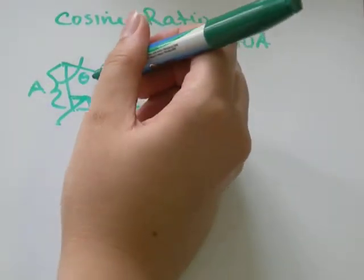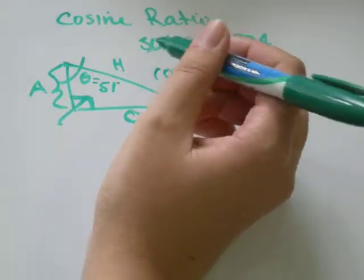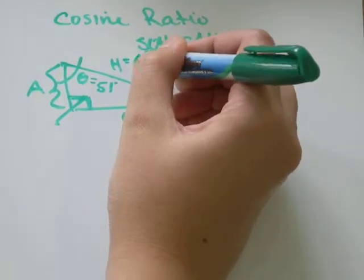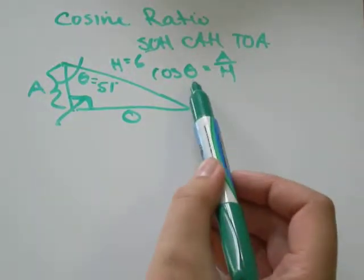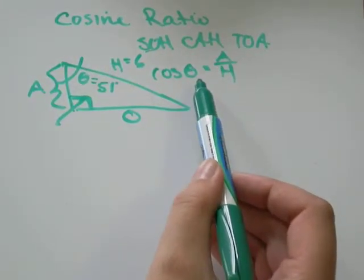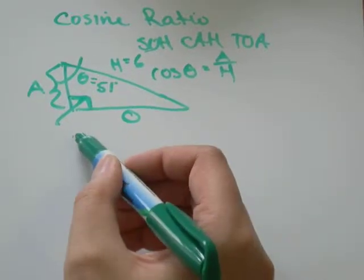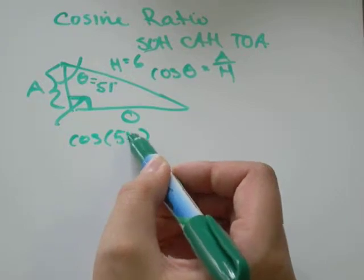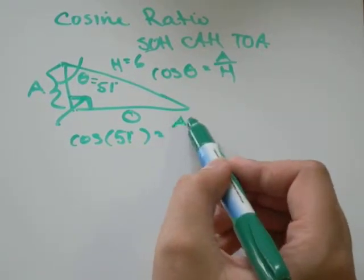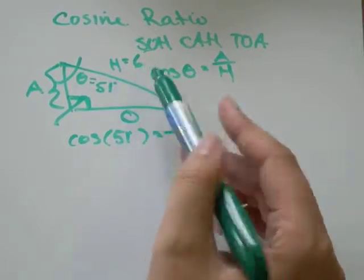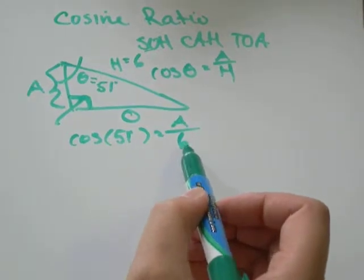Let's say that we know theta equals 51 degrees, and the hypotenuse equals 6. And we're being asked to find the adjacent side. All I need to do is think about my ratio from SOH-CAH-TOA and plug in everything that I know. Cos of theta, I know theta is equal to 51 degrees. And I know that equals the adjacent side, which I don't know, over the hypotenuse, which I know is 6.